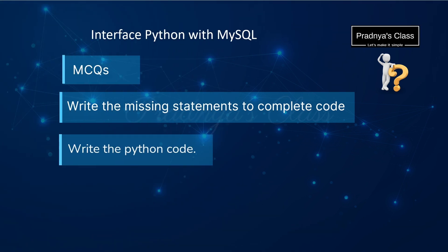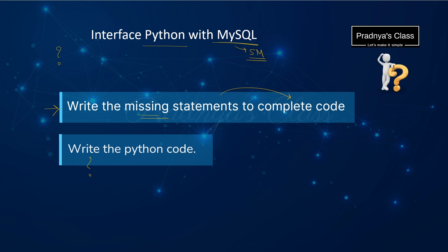Now we are at the final topic: Interface Python with MySQL. Generally you will be getting a question in which you need to write the missing statement to complete the code. Sometimes you may need to write the Python code too. The weightage for this chapter is 5 marks. To solve these questions you should be clear with the concept of MySQL and how to do the connectivity using Python. You should never skip this type of question because to write one word you will be getting one mark.